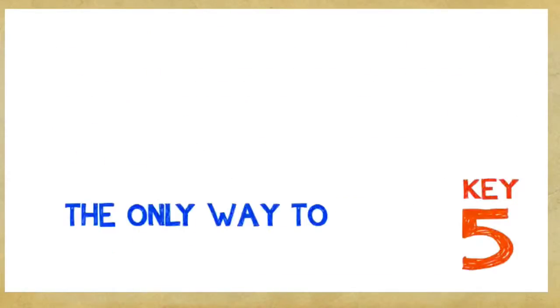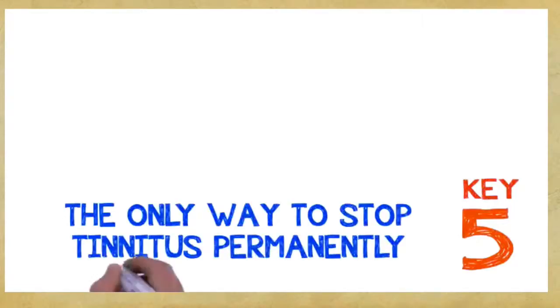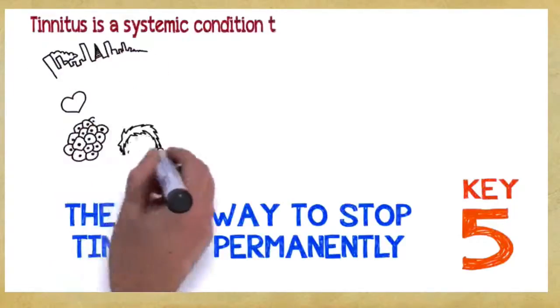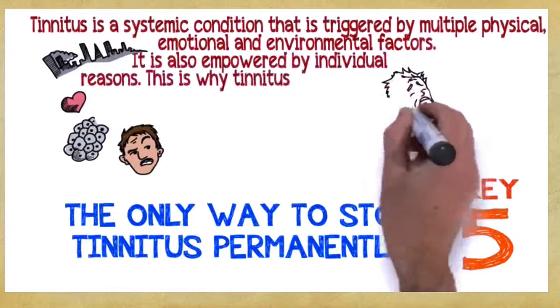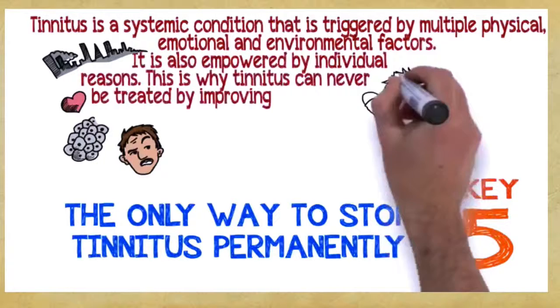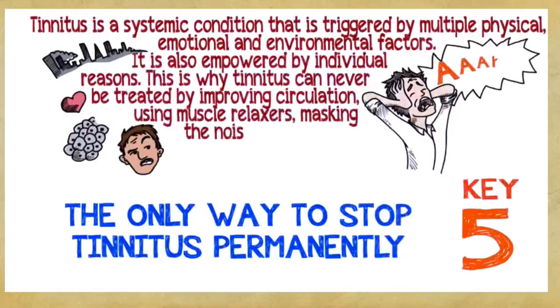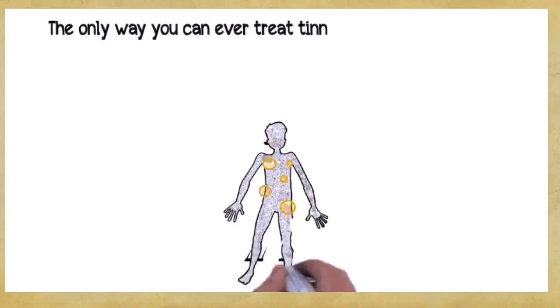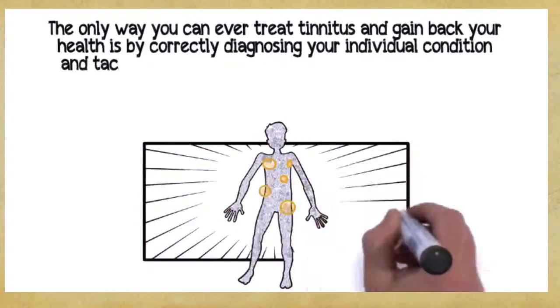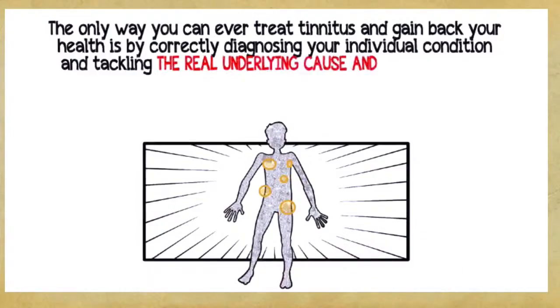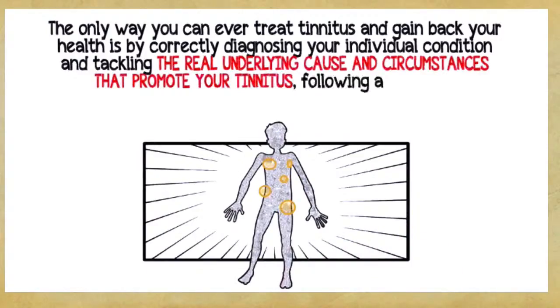Key number five: The only way to stop tinnitus permanently. Tinnitus is a systemic condition that is triggered by multiple physical, emotional, and environmental factors. It's also empowered by individual reasons. This is why tinnitus can never be treated by improving circulation, using muscle relaxers, masking the noise, or cutting a nerve in your auditory system. The only way you can ever treat tinnitus and gain back your health is by correctly diagnosing your individual condition and tackling the real underlying cause and circumstances that promote your tinnitus, following a complete, multi-dimensional, holistic program.